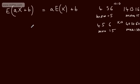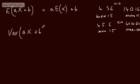With the variance, adding a constant doesn't change the spread of data — variance measures spread, not location. So Var(aX + b) = a²·Var(X). The b term disappears because shifting data doesn't affect how spread out it is. Multiplying each value by a scales the squared distances by a², hence the a² factor. These are two results you can quote.